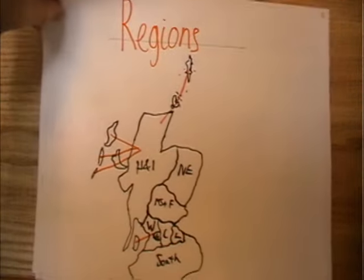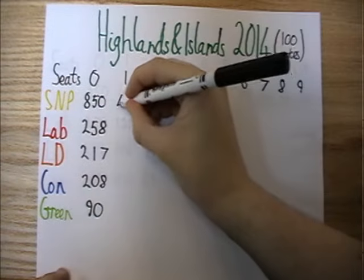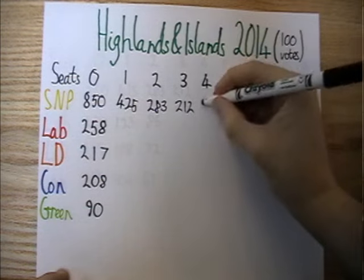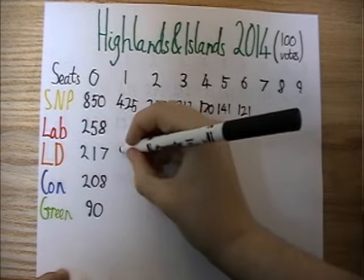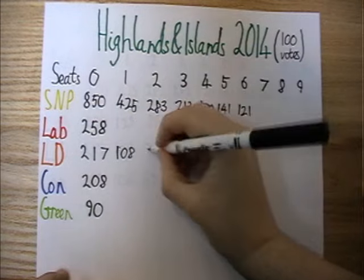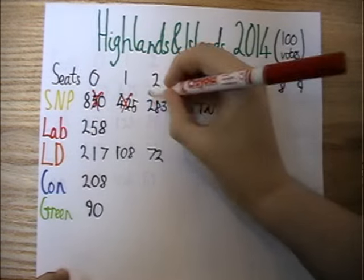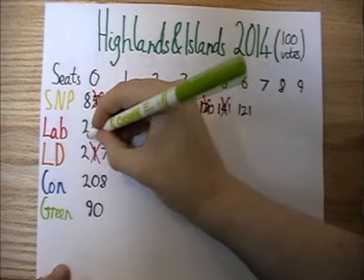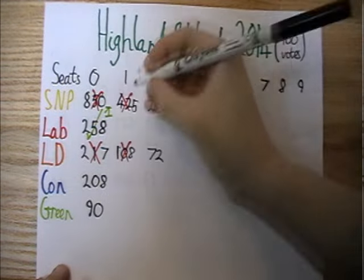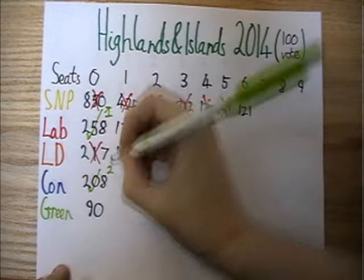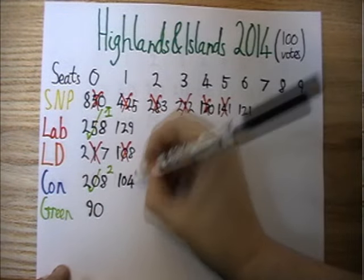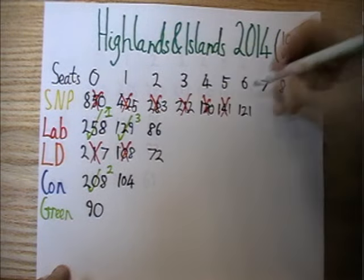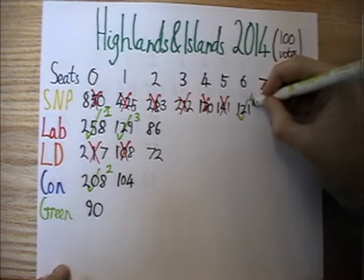Let's do a quick example. Here are the results for the Highlands and Islands region in 2011. The SNP won 6 of the 8 constituencies on offer, whilst the Liberal Democrats won the other 2. This means that before we begin distributing the list seats, the quotients for the SNP and Lib Dems are already based on them having 6 and 2 seats respectively. This means the first list seat goes to Labour rather than the SNP, and second we have the Conservatives, despite them coming fourth in the votes overall. Next another Labour seat, followed by 2 for the SNP, another Conservative, and a final SNP seat.